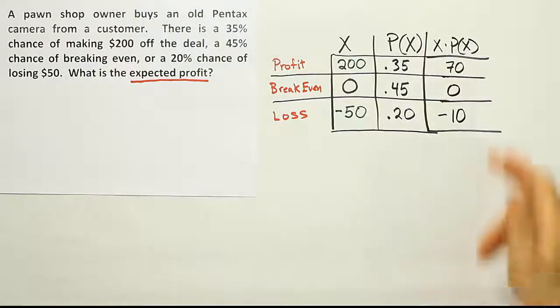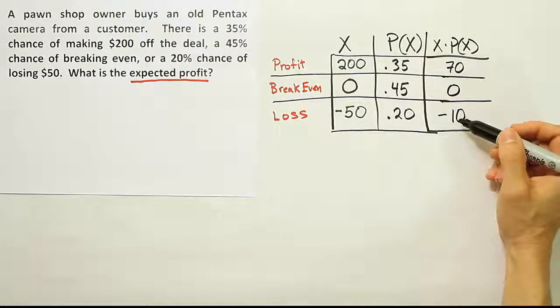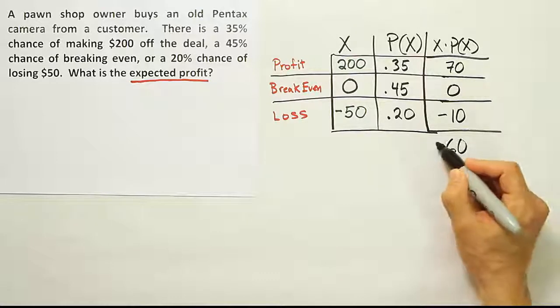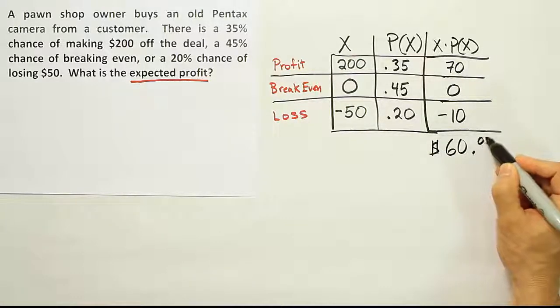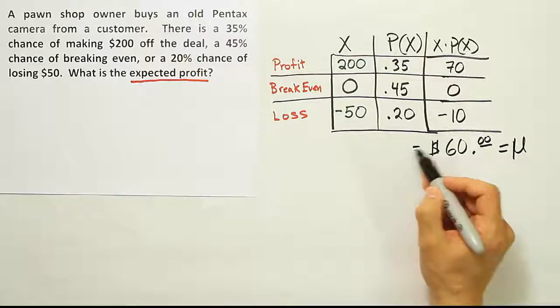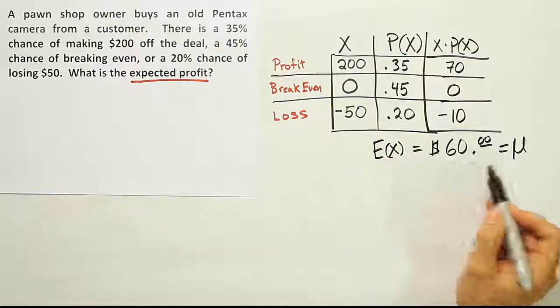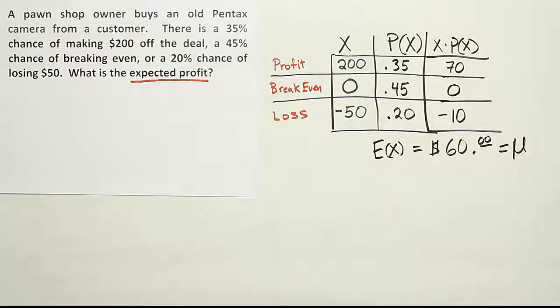Okay. Now at that point, we just have to add this column together to get the mean. And when we do that, we get 70 plus 0 is 70 minus 10 is $60. So this guy's expected value on this deal is 60 bucks. That's what he can expect to make. That's what he'll make on average. And remember, this notation is the same thing: expected value of X. Either way, we're saying that he expects to make a profit of $60 on this kind of deal.